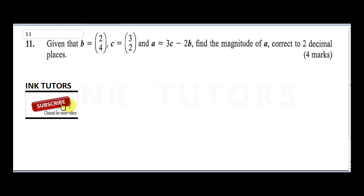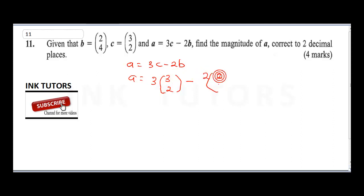To solve this question, we're going to perform the equation a = 3c - 2b. So a is equal to 3 times (3, 2) minus 2 times (2, 4). Now, 3 times 3 gives us 9, and 3 times 2 gives us 6.